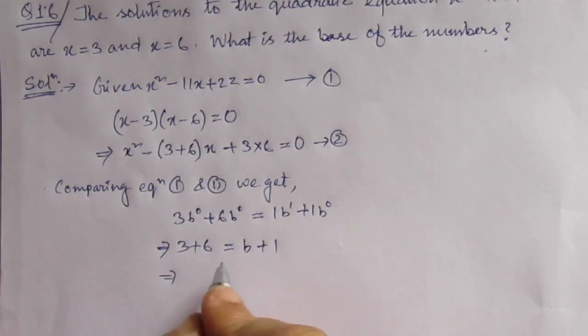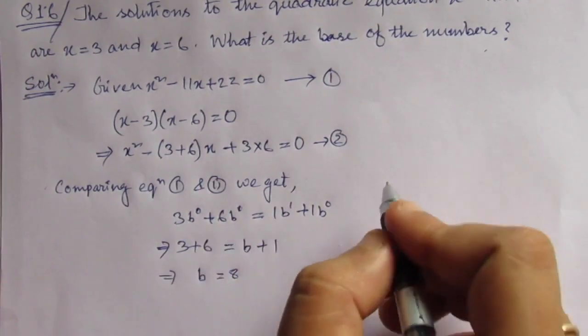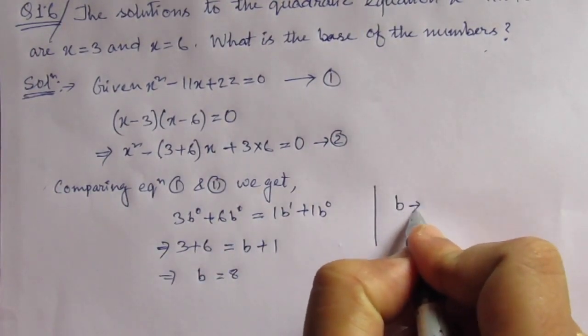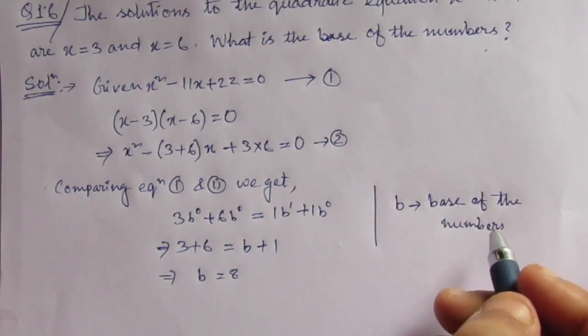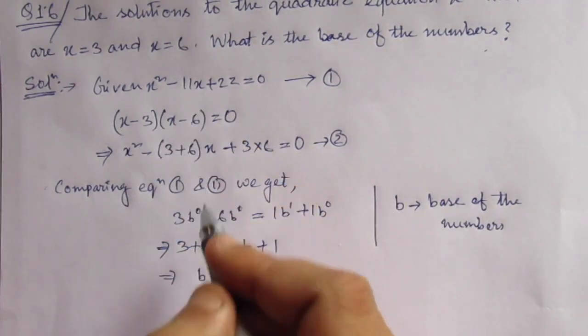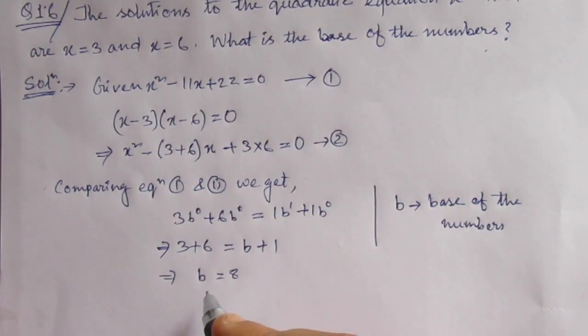After solving this, we will get b equal to 8. So this is the base. That means here we have considered b is the base of the numbers. We have considered b be the base, and comparing these equations, we have found out that b equal to 8.